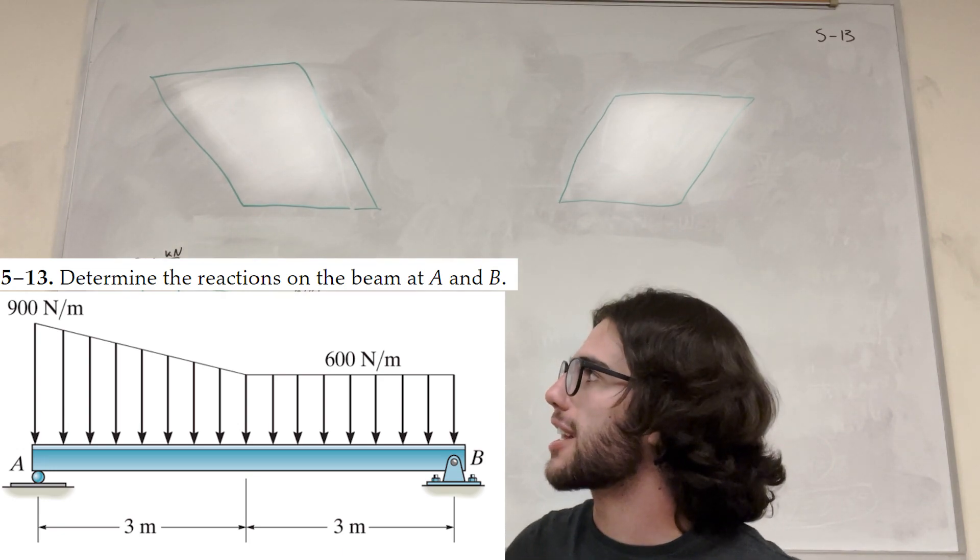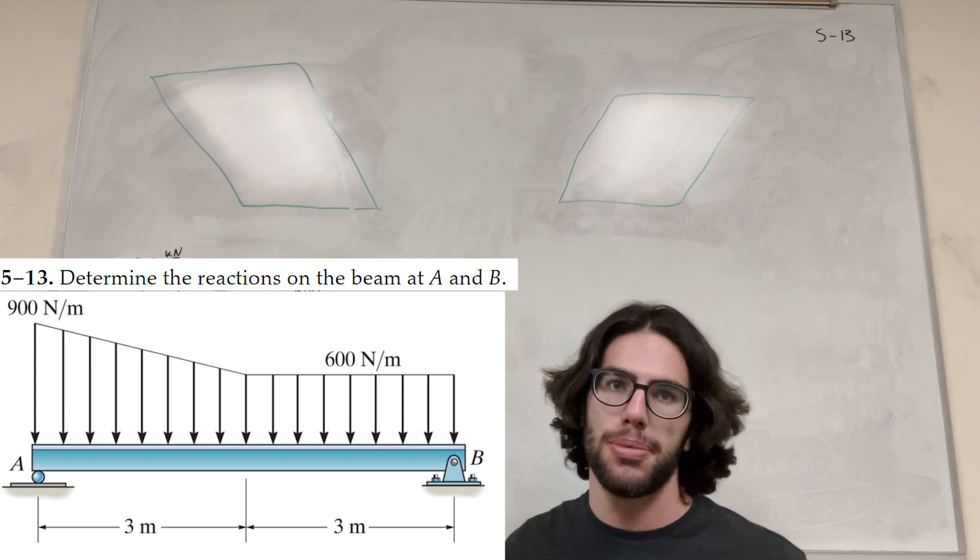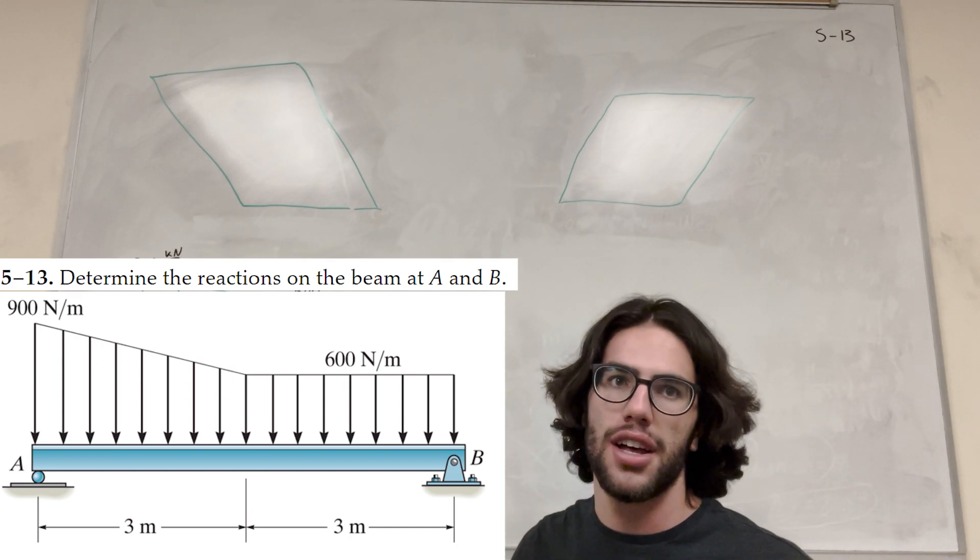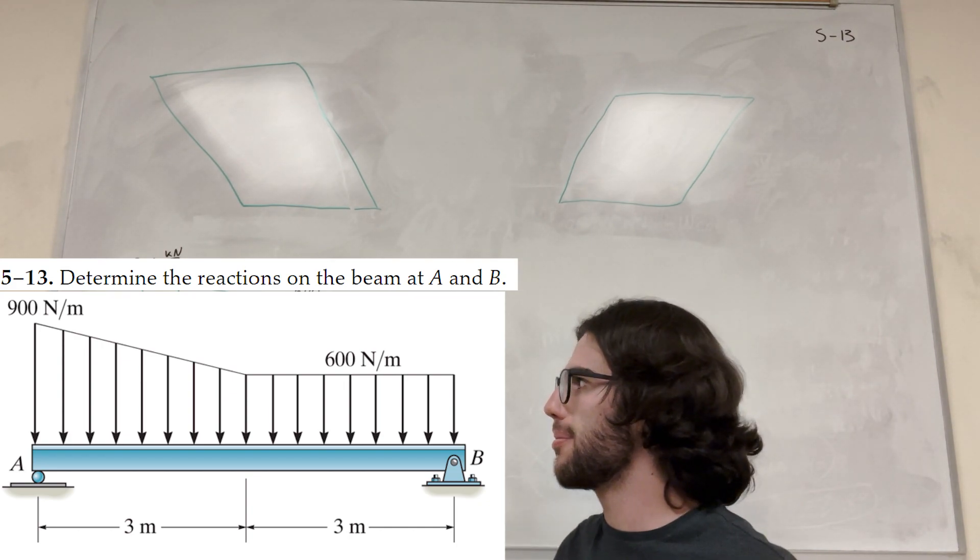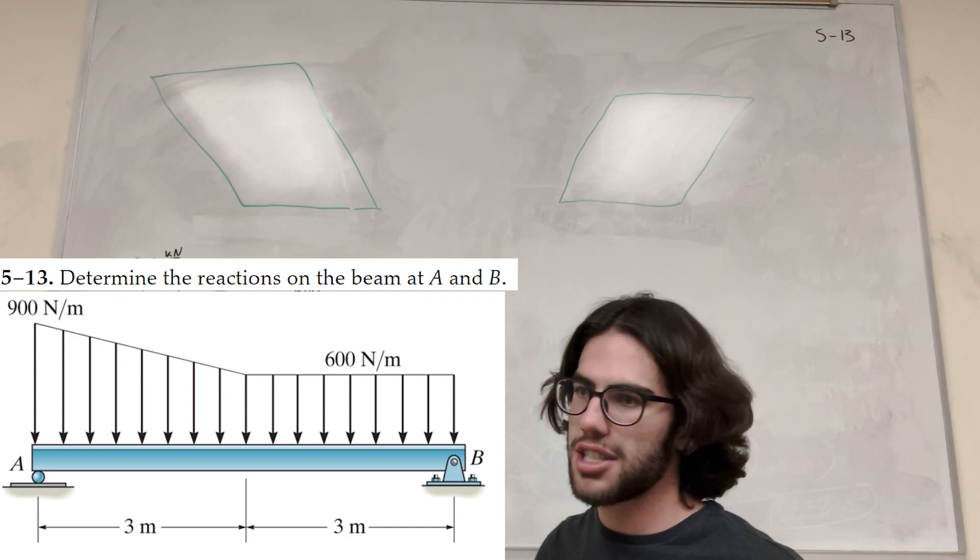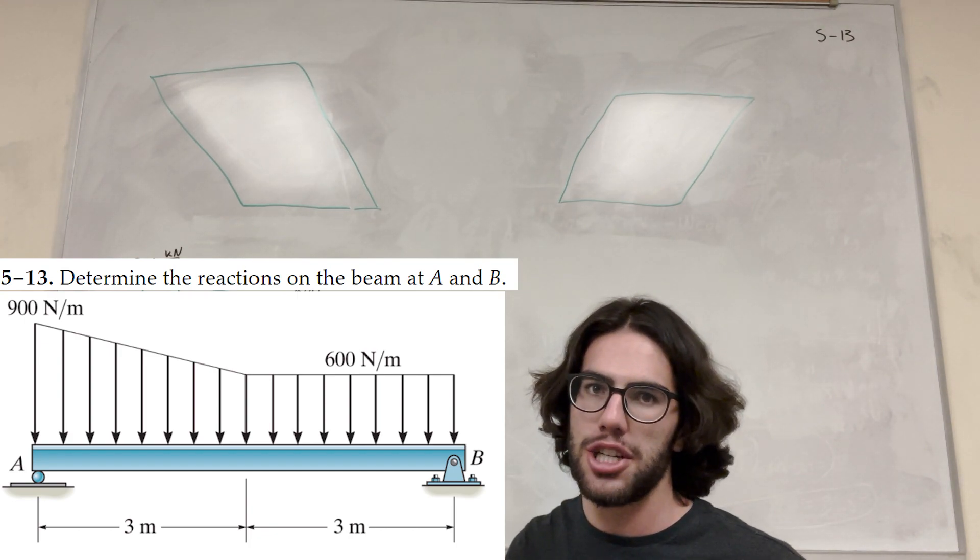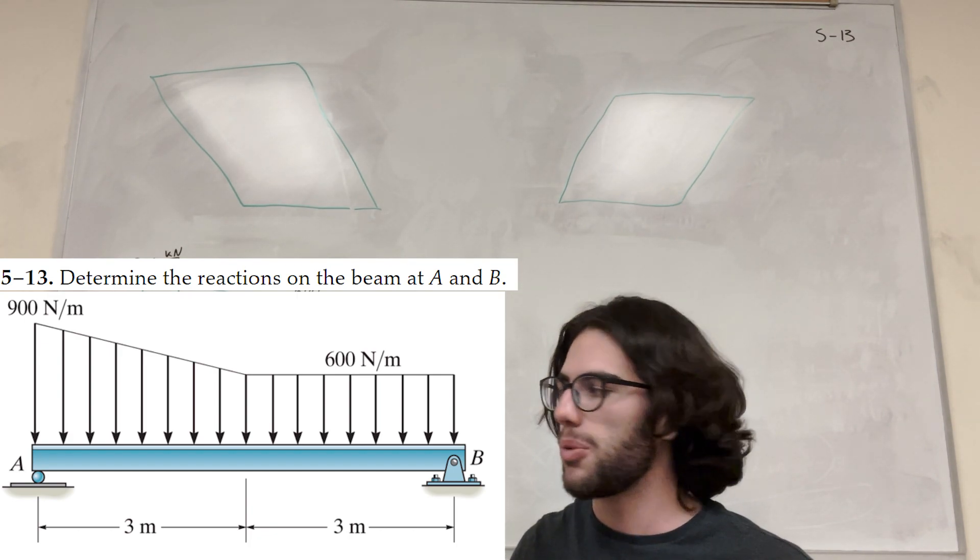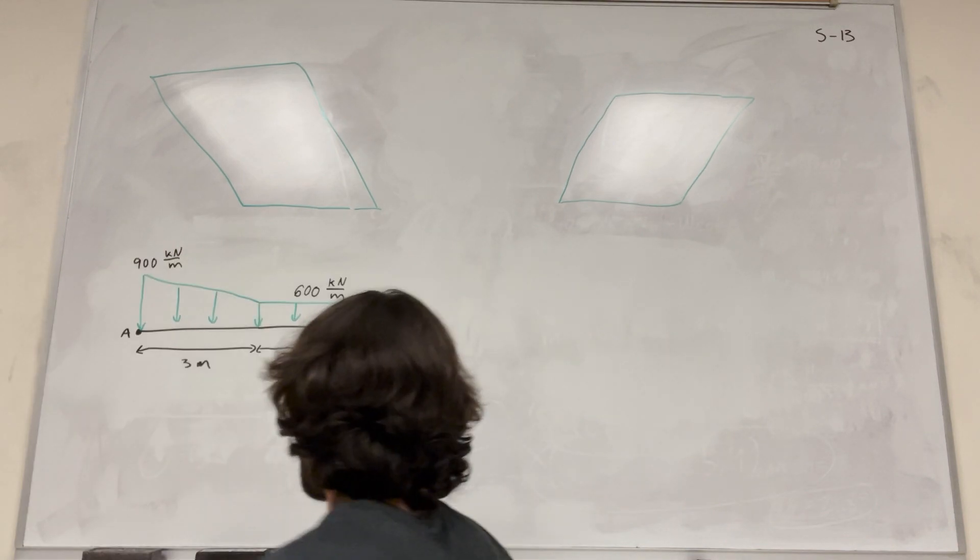What's up Calc gang? Alright, so we got a statics problem today. We have this distributed load over this beam and we want to find the components of the reactions at points A and B. So let's get started. Looking at our image, A is a roller and B is a pin. So what do we know about rollers and pins?